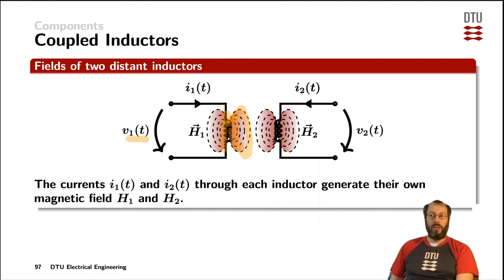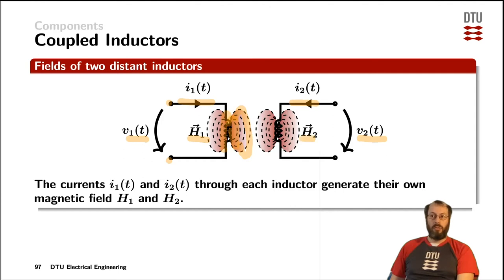An AC voltage V1 across the terminals of one of the windings would generate an AC current I1 as a function of time, while the voltage V2 across the other winding would generate its own current I2 through the other windings. Both of them would end up having their corresponding magnetic fields, H1 and H2, represented by those matrices here.